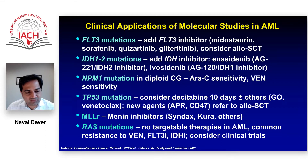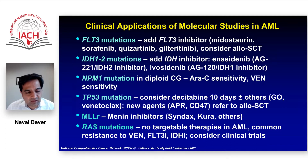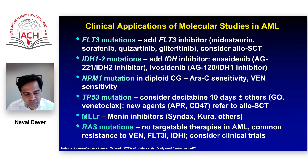This includes FLT3 mutations, IDH1 and 2 mutations, NPM1 mutations, and now most recently, drugs that may have specific activity for TP53. This includes a class of drugs called CD47 SIRP-alpha antibodies, and also a group of drugs showing encouraging activity in MLL-rearranged acute myeloid leukemia and acute lymphoid leukemia — including the group of menin inhibitors such as Syndax, Curis, and others.